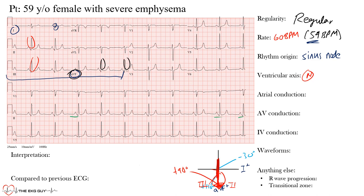The axis is at about +88 degrees. While technically within normal limits, in a 59-year-old female this should raise concern. Typically as we age, the axis shifts leftward as the left ventricle dominates. A rightward shift in an older patient — possibly from right ventricular strain or right ventricular hypertrophy — is something to be aware of. We'll discuss this more shortly.